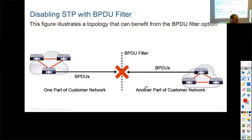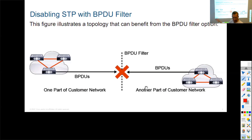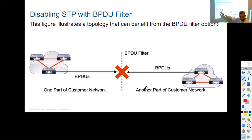If you don't have this kind of environment with external networks, you don't need BPDU Filter. But if you want to completely separate two spanning tree domains even within your own network, BPDU Filter is another option. Remember: any given switch can belong to one spanning tree domain only — never more than one.